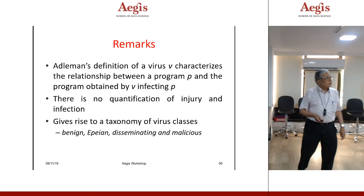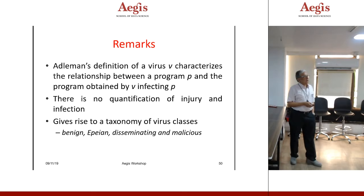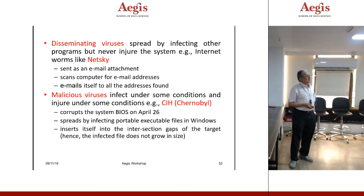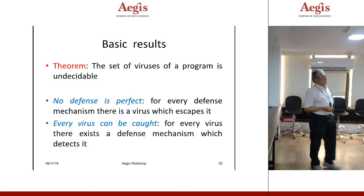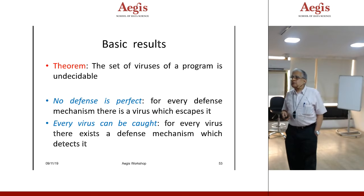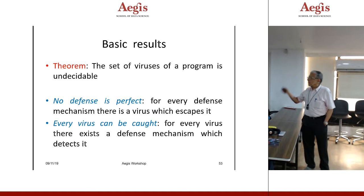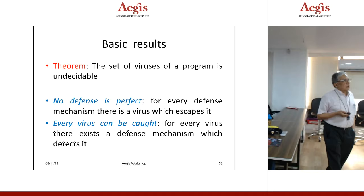Adelman's basic result: the set of viruses of a program is undecidable. That means you will never be able to say which are all the viruses for this program — I can always write another one. This follows from Turing's undecidability result on computability. This also leads to jobs for security professionals. No defense is perfect — for every defense mechanism there is a virus which escapes it. But every virus can be caught — for every virus there exists a defense mechanism which detects it. Virus detection becomes a diagonal argument. The questions people ask: can we detect computer viruses? Can we disinfect? Is it possible to protect, and how?